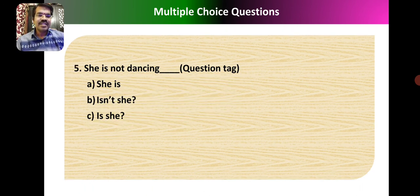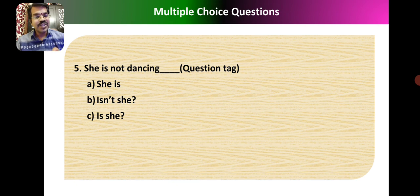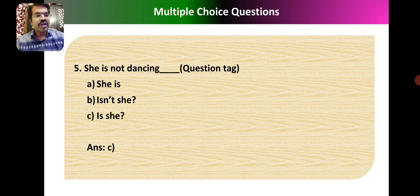Question 5: 'She is not dancing' — what question tag will you use? This is a negative statement, so you need a positive question tag. The answer is 'is she?' — this is the positive question tag used for this sentence.